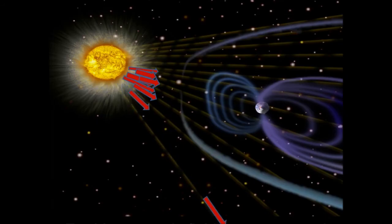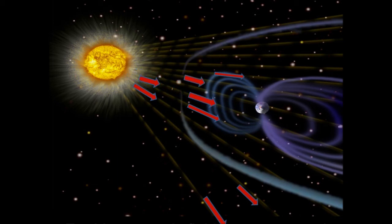Solar wind hits earth like a fire hose. The earth is largely protected from the solar wind by its magnetic field, which deflects most of the charged particles. These particles would strip away the ozone layer, which protects the earth from harmful ultraviolet rays.